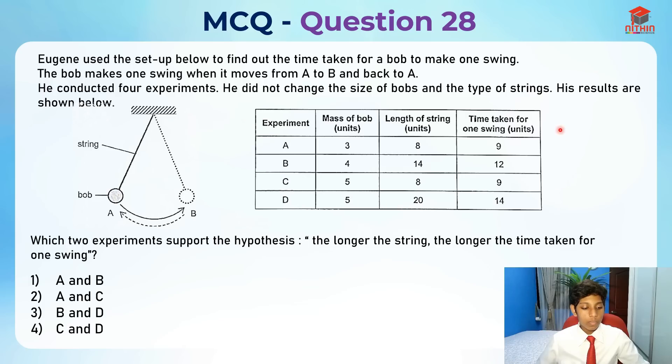So this is the experiment results. Basically experiment A... Let's read the question. Which two experiments support the hypothesis? The longer the string, the longer the time taken for one swing.